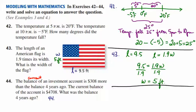Maybe it would be helpful to use words here. So think about what happens. You have a balance four years ago, and we know that the current balance is 308 dollars more than the balance four years ago. So there are two ways that we could set this up.